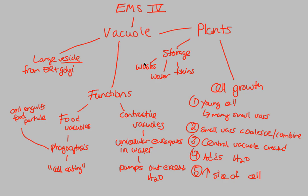We've now concluded our discussion on the endomembrane system, finishing with the vacuole. Vacuoles follow the vesicle format of the endomembrane system. Functions in animal cells include food vacuoles and contractile vacuoles, while in plants they are mainly used for storage and cell growth. We've gone through a nice tour of the cell, covering the nucleus, ribosomes, cell size, microscopy, and the endomembrane system. The endomembrane system allows the cell to communicate intracellularly via vesicles. Hopefully you now have a greater understanding and appreciation for cell structure.